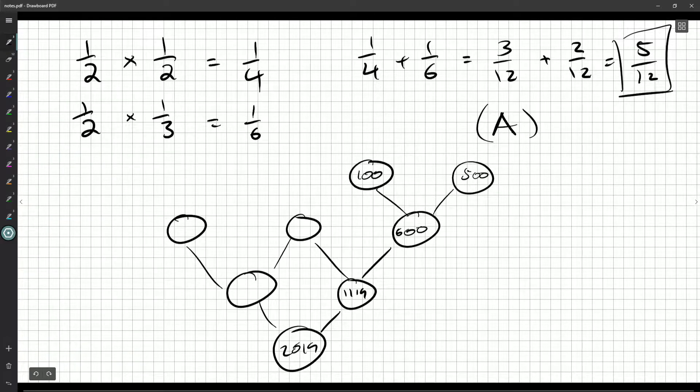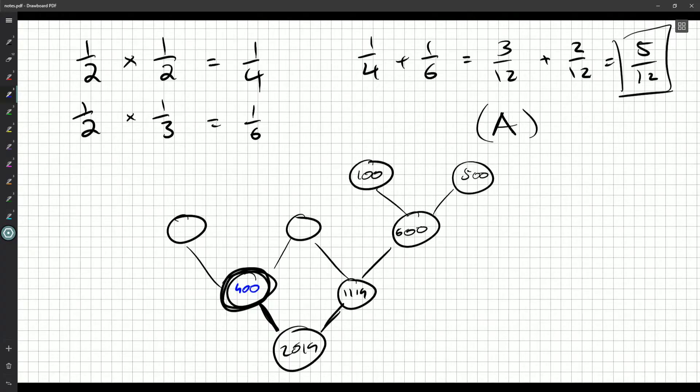So 2019 is 1119 plus what goes in here? Well, what do I have to add? 900. And if you need to grab your calculator for this sort of thing, that's perfectly fine. 2019 minus 1119 equals 900. There it is. You're allowed to use calculators, that's perfectly acceptable.